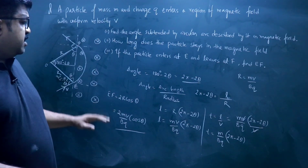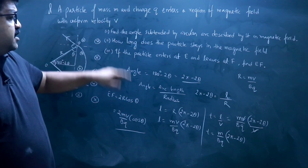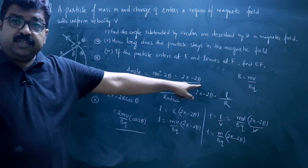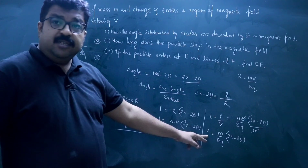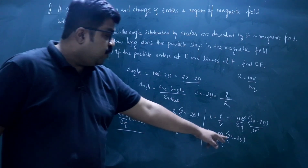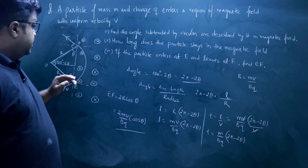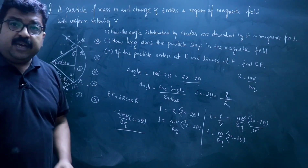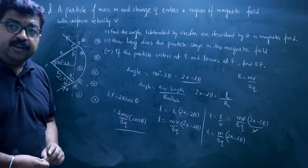So these are the three answers: the angle is pi minus 2 theta; the time spent is (M / BQ) times (pi minus 2 theta); and the length EF is 2MV cos theta divided by BQ. I hope this solution is clear to you.